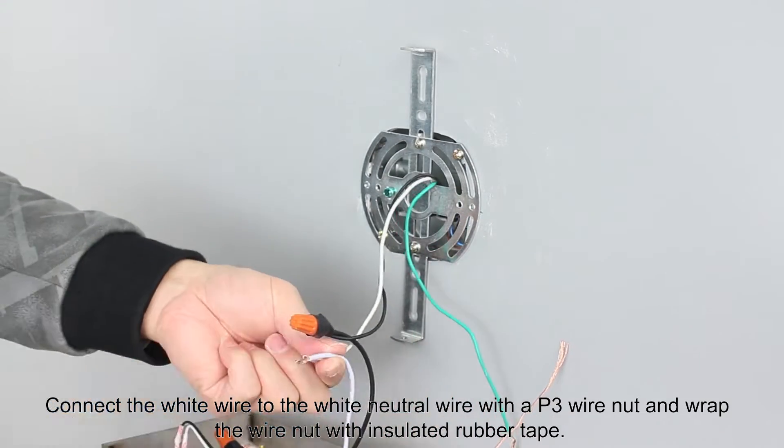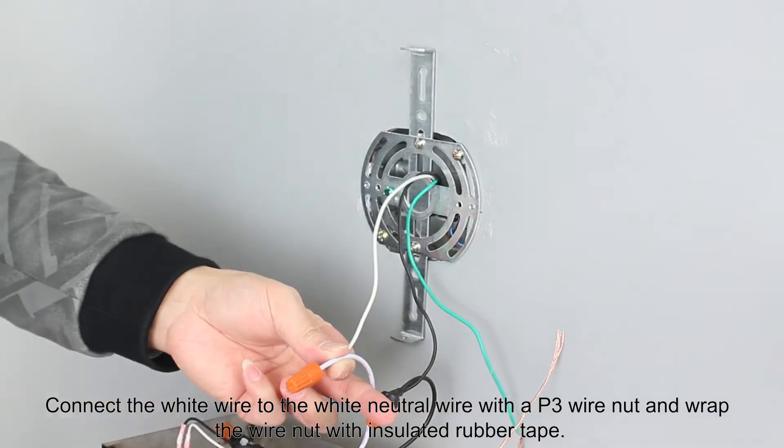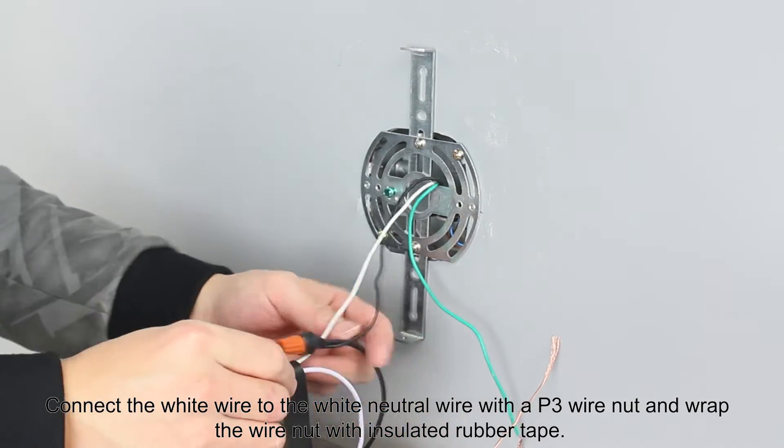Connect the white wire to the white neutral wire with a P3 wire nut and wrap the wire nut with insulated rubber tape.